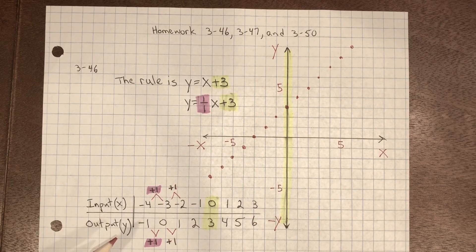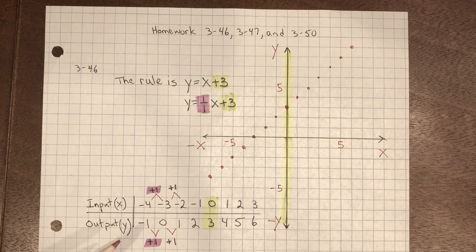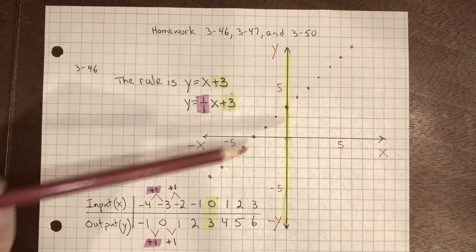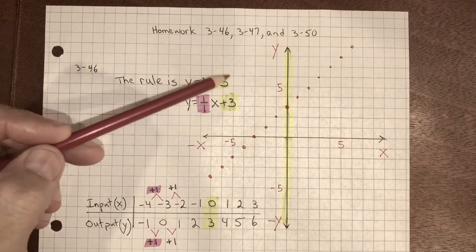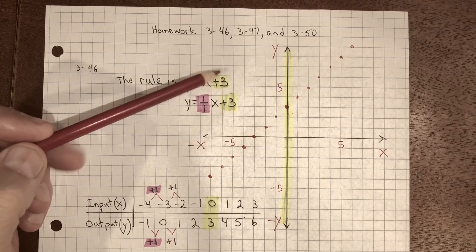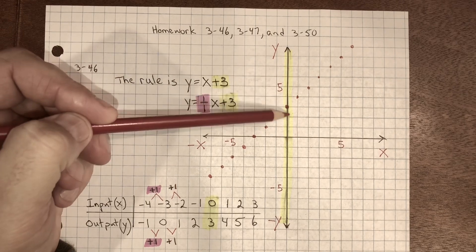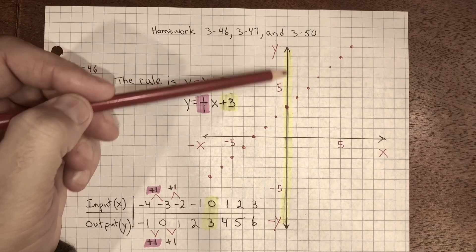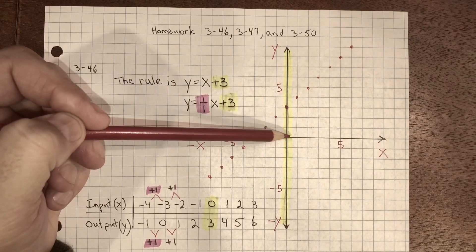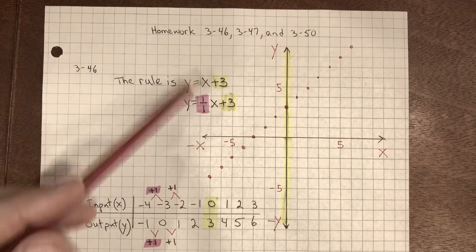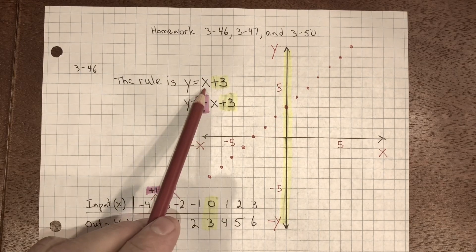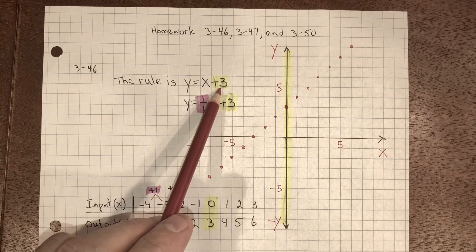Now we need to create the rule. This value is our y-intercept, the point that intersects the y-axis. Zero on the x, one, two, three on the y. Because when x equals zero, y equals three.